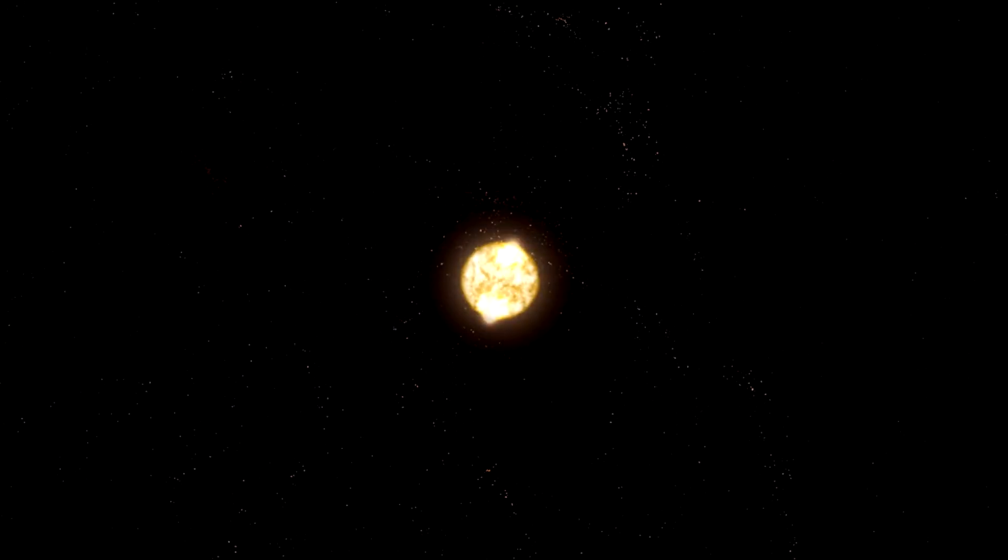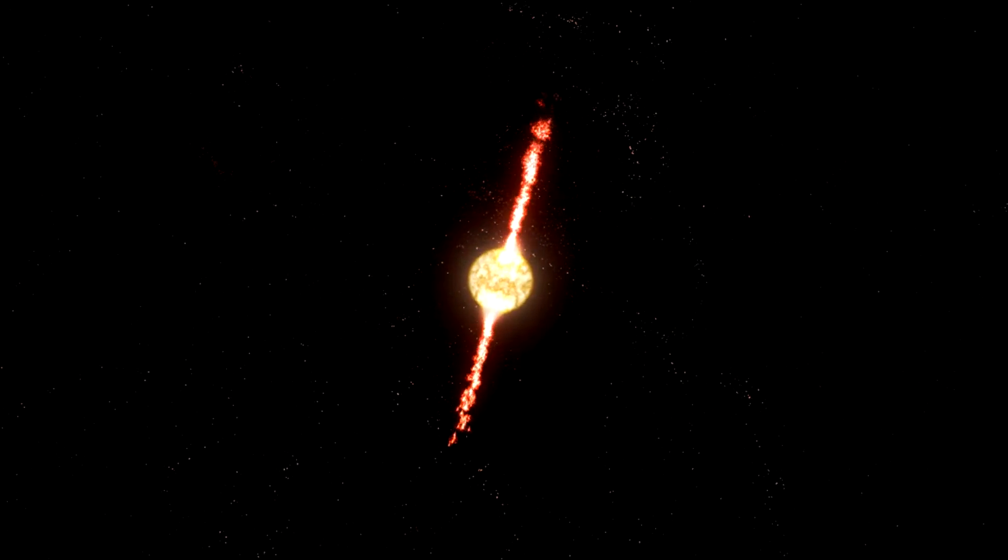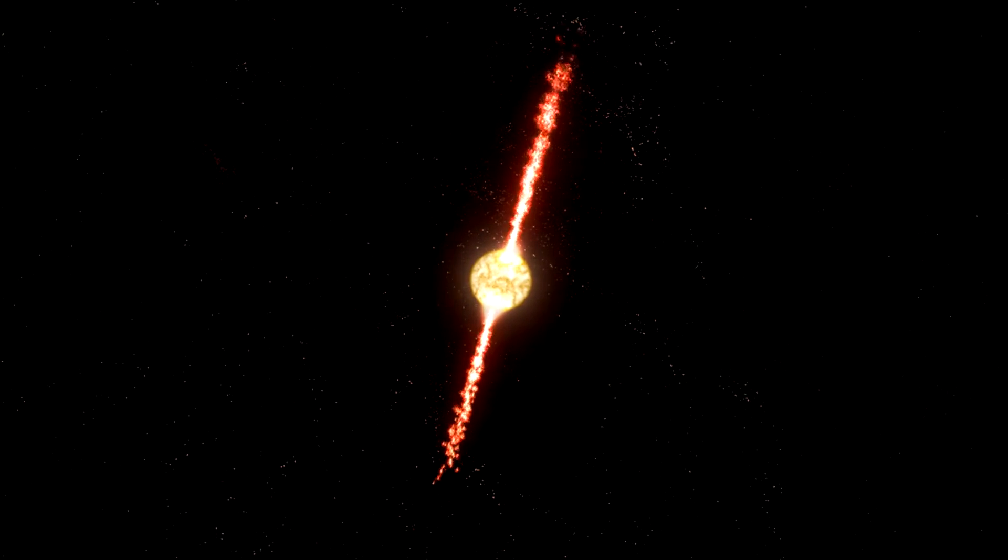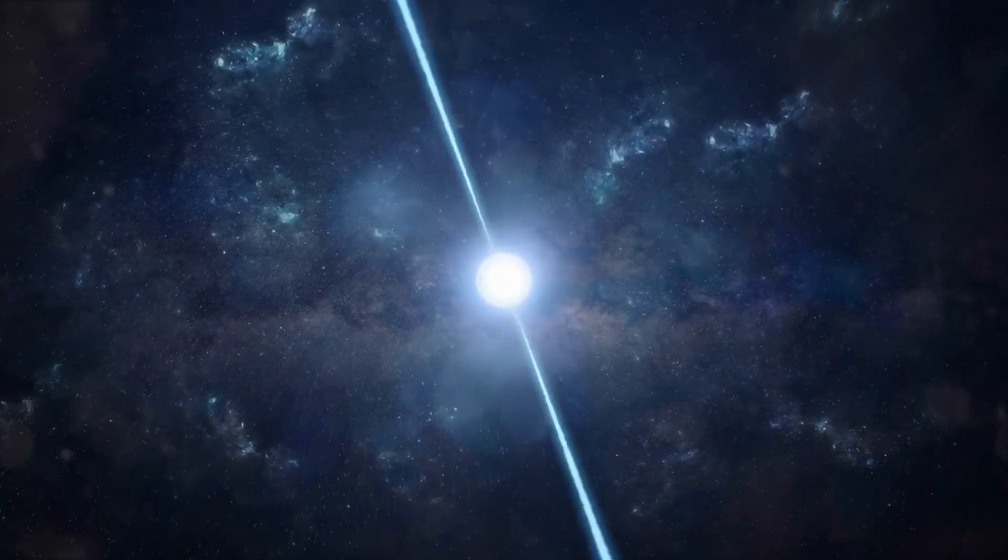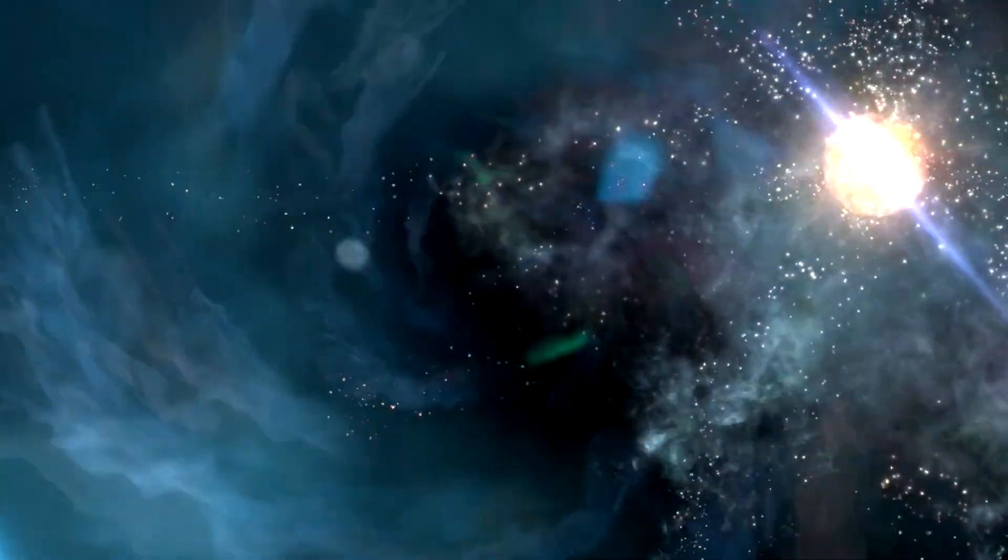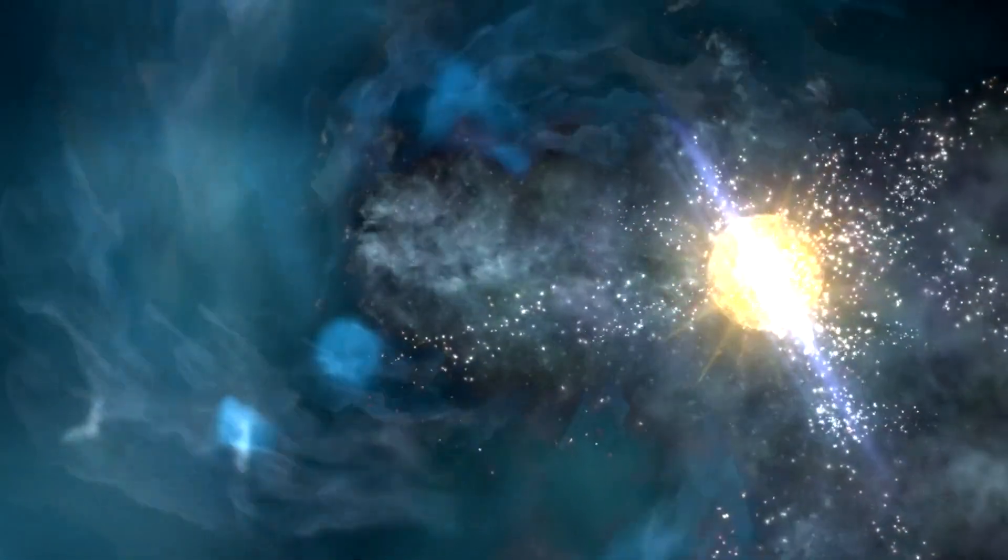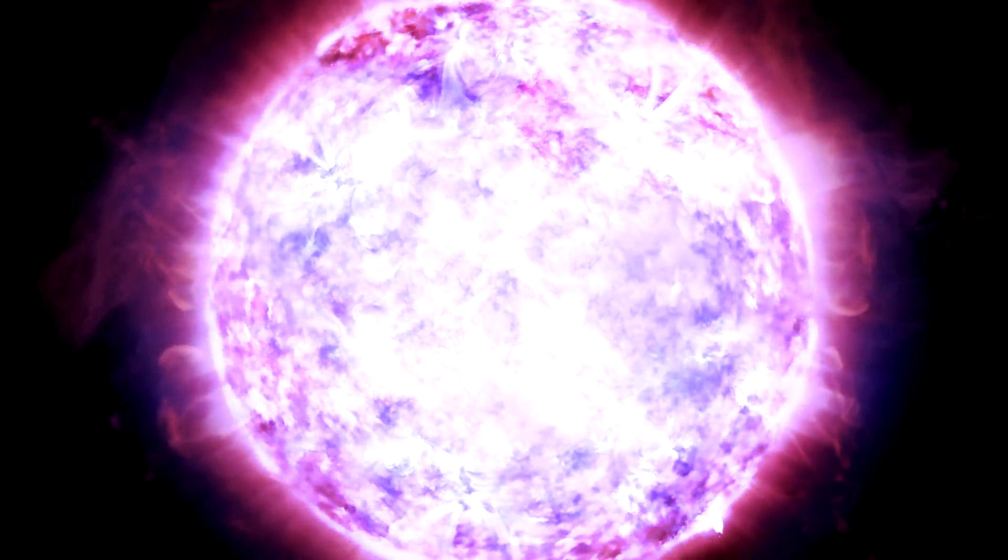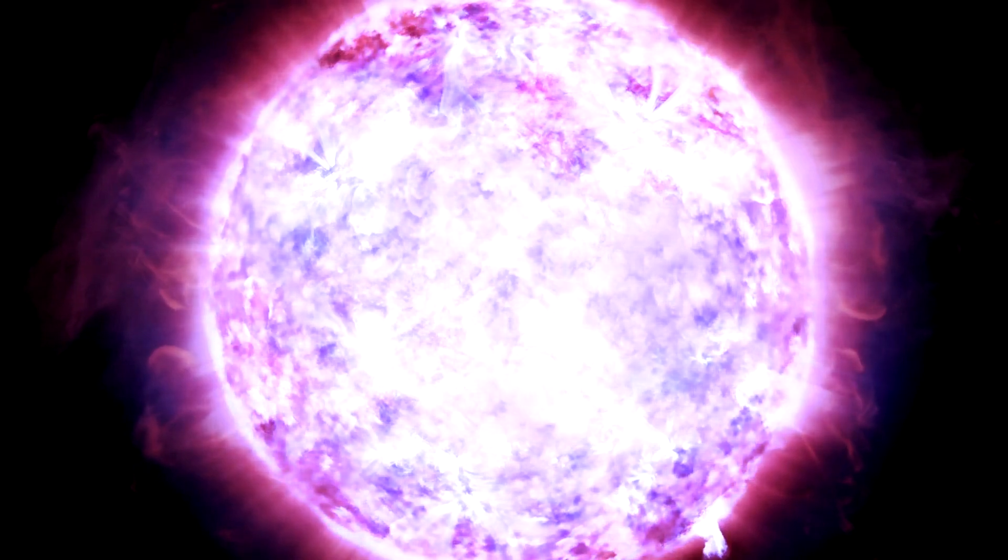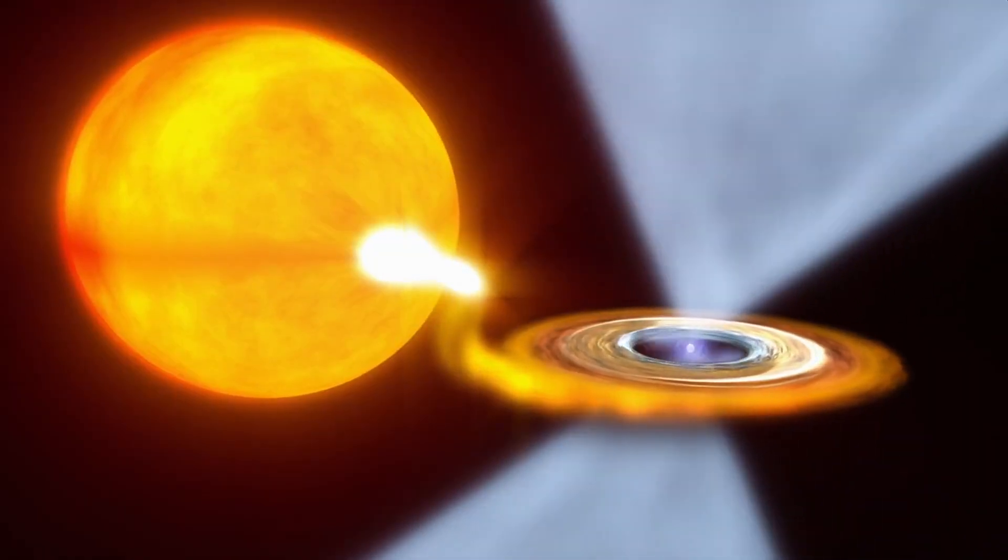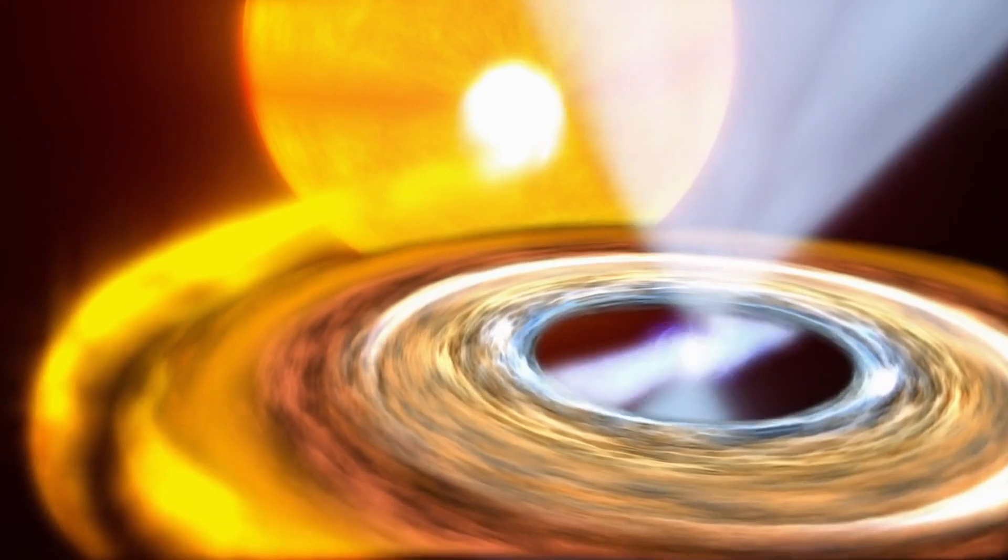If Betelgeuse's core, after the supernova, is between approximately 1.4 and 2.16 times the mass of our sun, it is likely to form a neutron star. Neutron stars are among the densest objects in the universe, second only to black holes. They are remnants of supernova explosions where the core's mass is insufficient to collapse into a black hole. A neutron star is incredibly compact, with a mass similar to that of the sun but compressed into a sphere with a radius of just about 10 to 15 kilometers. This results in an extraordinary density. A sugar cube-sized amount of neutron star material would weigh around 100 million tons on Earth.